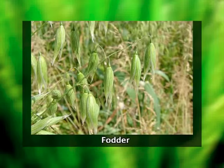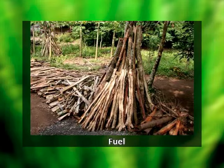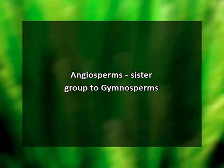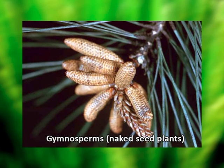The majority of plants we use economically for different purposes — food, fodder, fuel, fiber, or even medicinal plants — belong to angiosperms. At present, angiosperms are thought to be very closely related to another group called gymnosperms, and are sometimes called the sister group to the gymnosperms. Gymnosperms are basically plants with naked seeds.